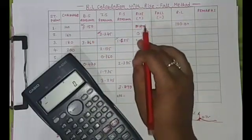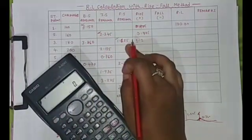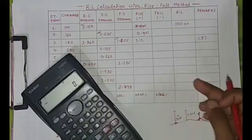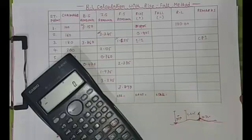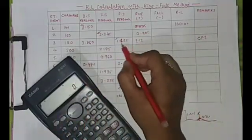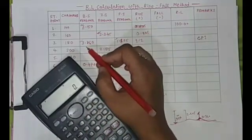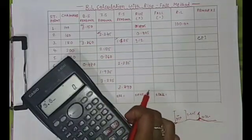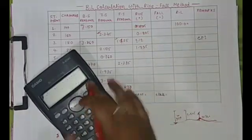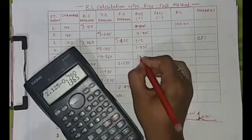Here you can see backsight, intermediate sight, and foresight. Foresight means the end of the instrument setup. In this setup the first reading is backsight, then intermediate, then foresight. This point is CP1 — change point — where the instrument setup is shifted. At CP1 both foresight and backsight are taken. In the next setup I subtract: backsight reading 3.860 minus 2.125 — again positive — and then 2.125 minus 0.760 — again positive, giving 1.365.